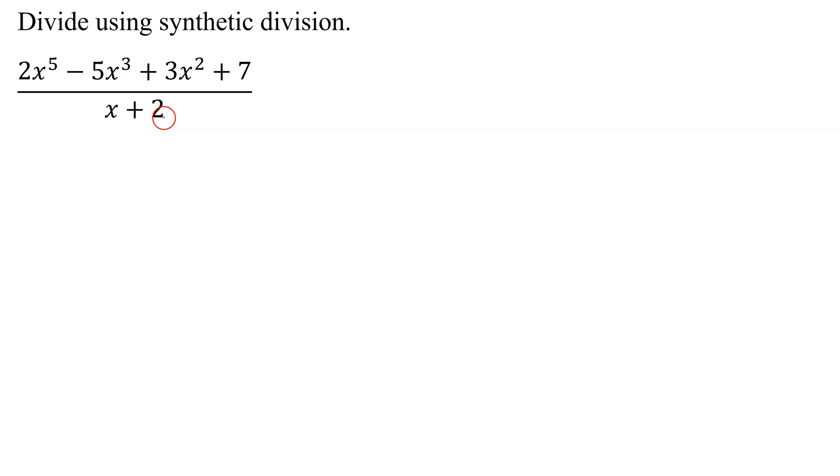The first thing we need to do is check to see if our numerator has any missing terms. I have an x to the fifth term but I don't have an x to the fourth term. I have x cubed, x squared, there's a missing x term, and then there's a constant. So I have to put placeholders in there for all my missing terms.